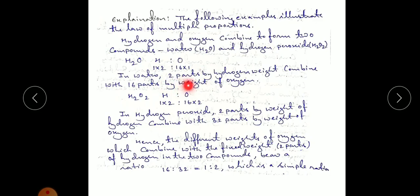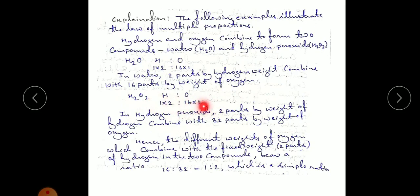In the water molecule, two parts by weight of hydrogen combine with 16 parts by weight of oxygen. In hydrogen peroxide, the ratio is 1×2 for hydrogen and 16×2 for oxygen, because there are two oxygen atoms. So from hydrogen peroxide, two parts by weight of hydrogen combine with 32 parts by weight of oxygen (16×2 = 32).